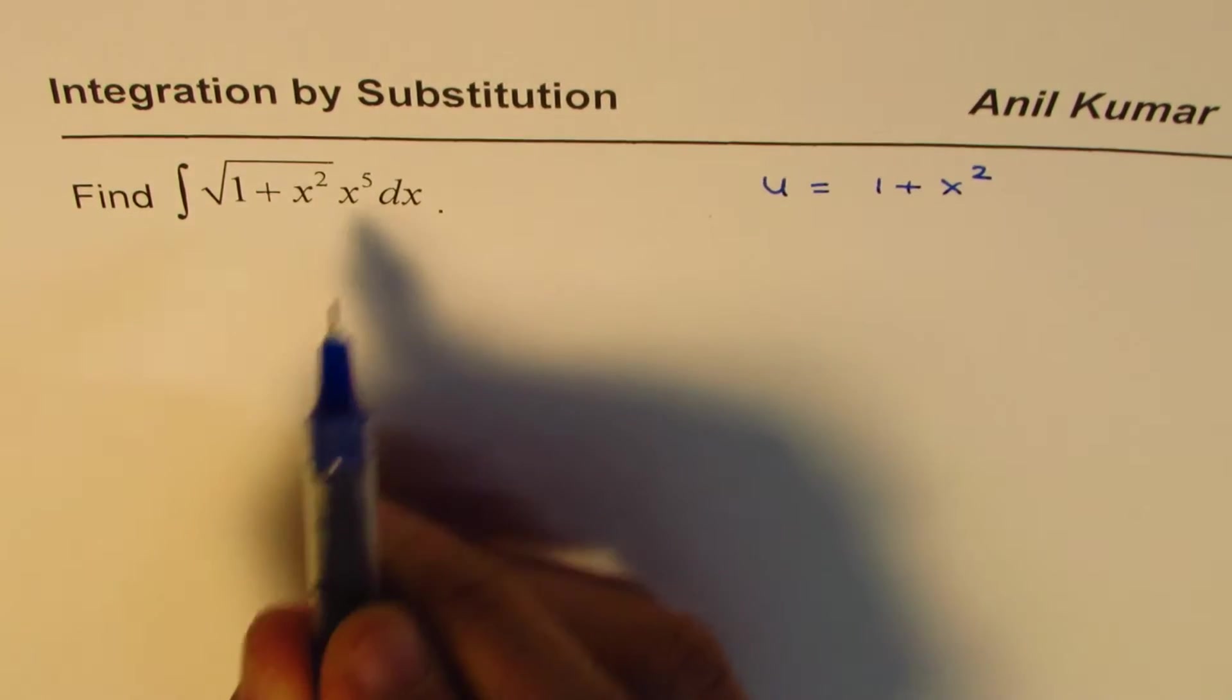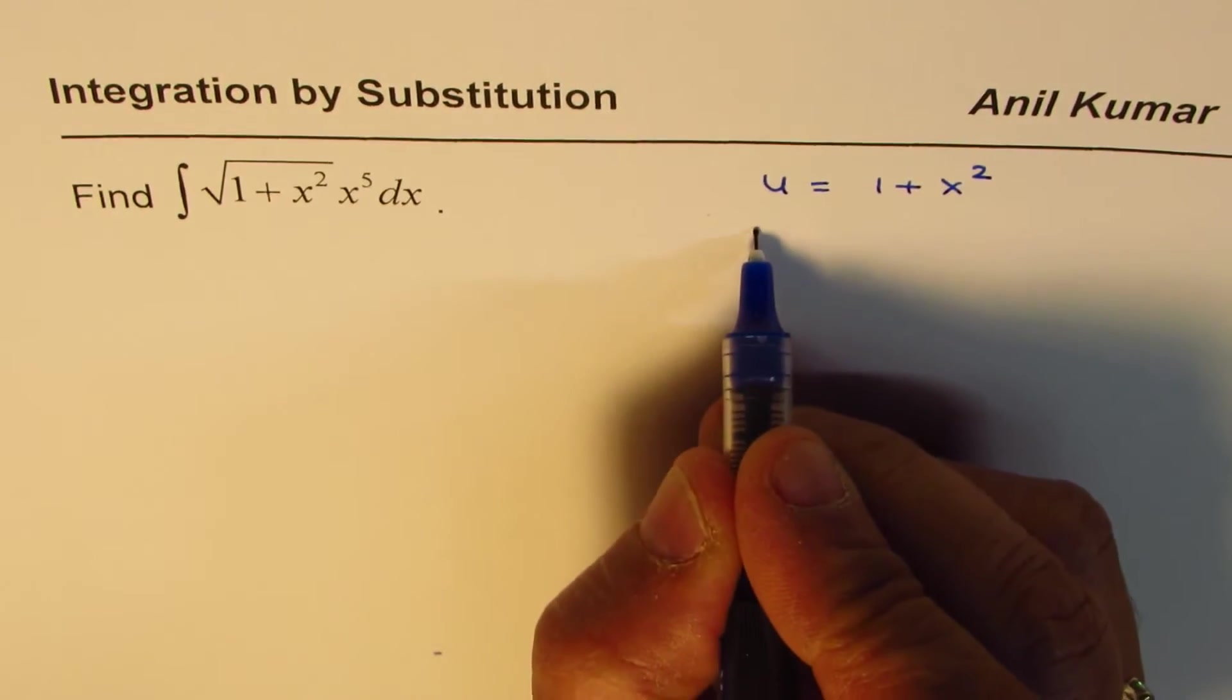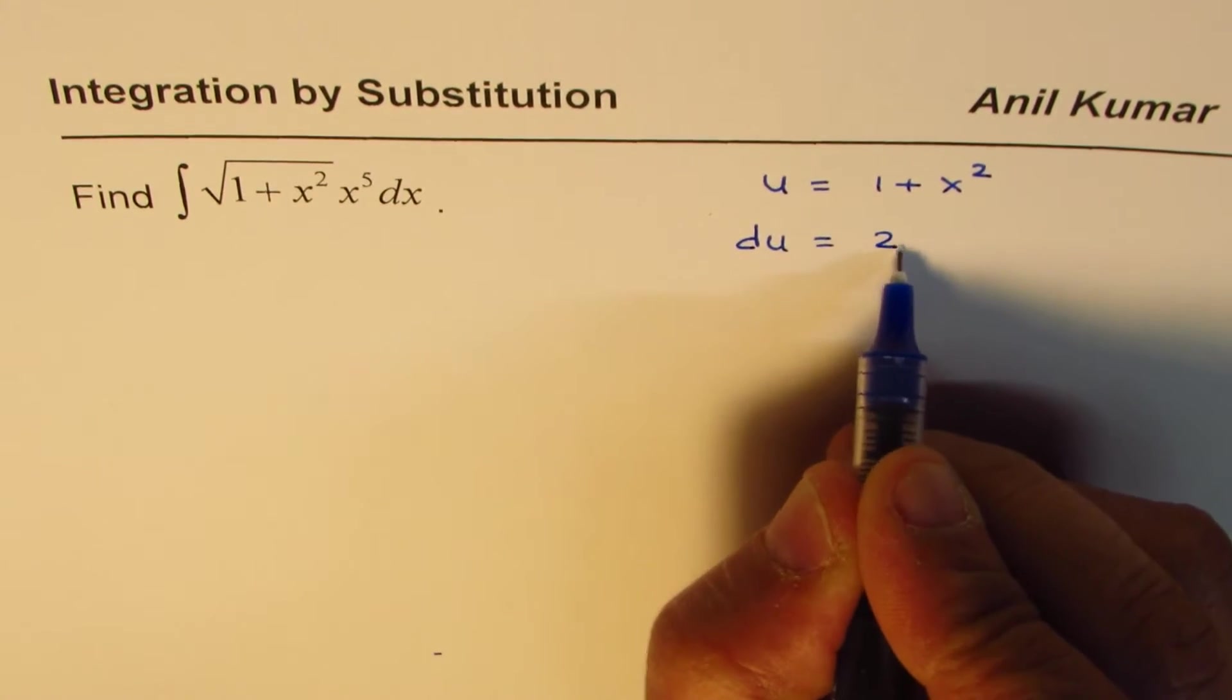As soon as you do that, you have to replace dx with du because the function is this. So we say du equals 2x dx.